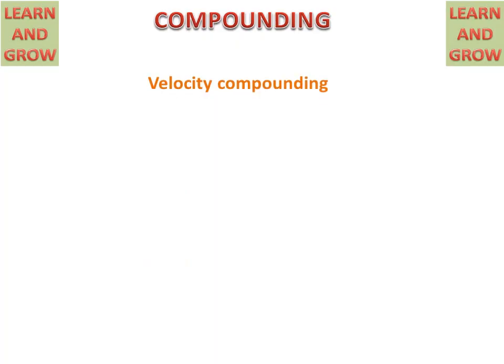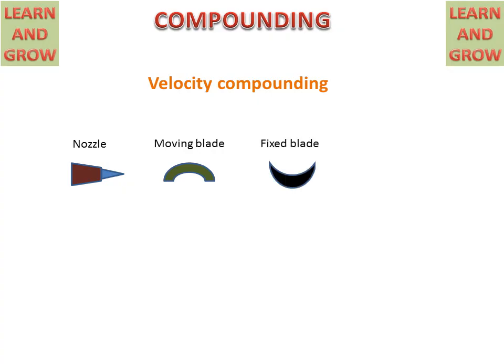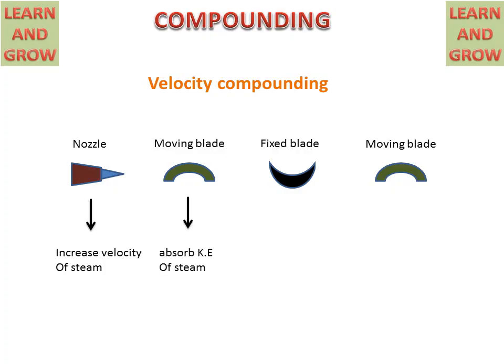What is velocity compounding? First, let us discuss the parts used in velocity compounding. We have a nozzle, then a moving blade, then a fixed blade, and another moving blade. The nozzle is used to increase the velocity of steam, and the moving blade is used to absorb the kinetic energy of steam.